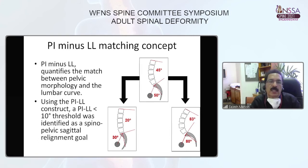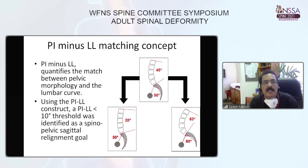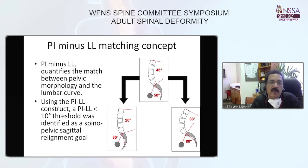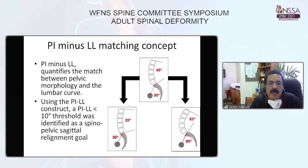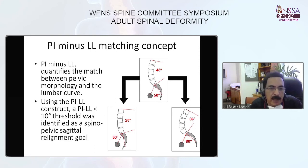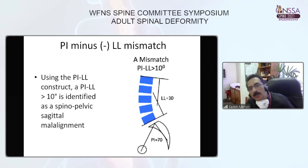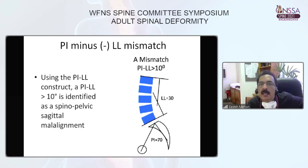A recently developed concept is PI minus LL, the lumbar lordosis matching concept. PI minus LL quantifies the match between pelvic morphology and the lumbar curve. A PI minus LL greater than 10 degrees was identified as the threshold for spino-pelvic sagittal realignment, and exceeding this threshold is called PI-LL mismatch.